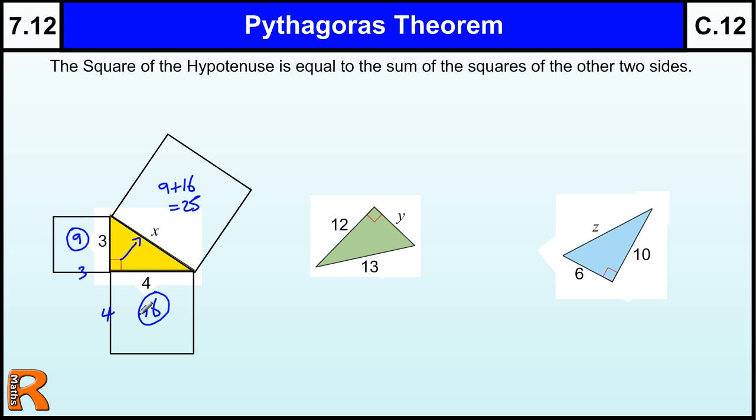Now that helps us, because if we've got a missing side, we can work out the length of one side of a square, because we know this side times itself equals 25. So to find, to do the opposite of that, we need to do the square root of 25. So x is equal to the square root of 25, the square root of this area of this square.